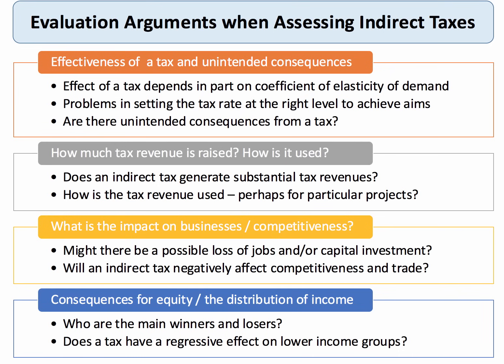What is the impact on businesses and competitiveness? If you put a tax on a product, does it make a producer or industry less competitive globally — could that lead to job losses? Will businesses cut back on investment or employment? These macro effects matter particularly for carbon taxes. Finally, and very importantly: when discussing an indirect tax on consumers, always make an evaluative comment about equity and the distribution of income. Who are the winners and losers? Could a tax like VAT or the sugar tax be considered regressive — having a disproportionate effect on lower-income groups?